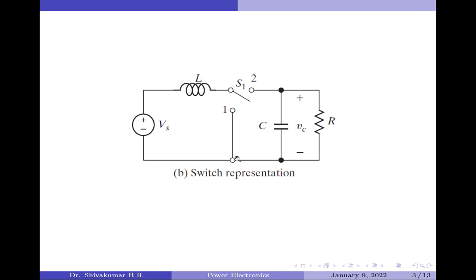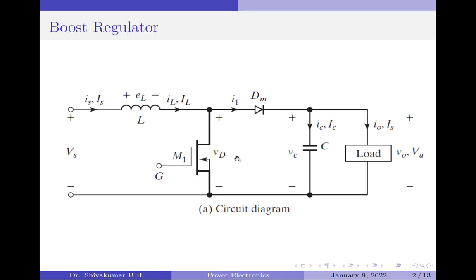The MOSFET and diode act as two single pole single throw bidirectional switches. That means when one of them is on, the other one must be in the off state. The overall working principle of the circuit can be divided into two modes based upon which switching device is on. Let us start with mode 1.